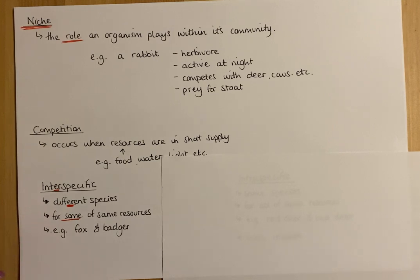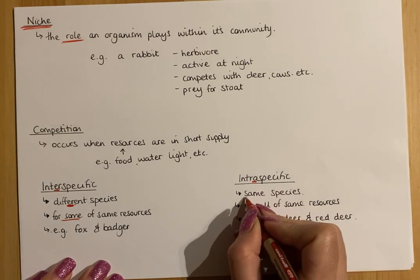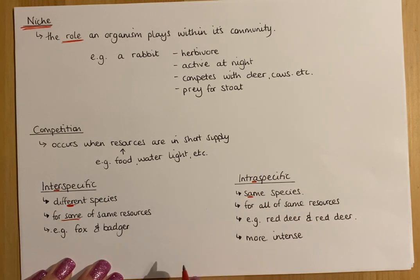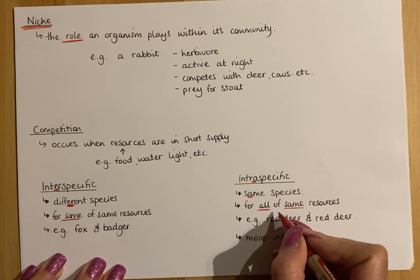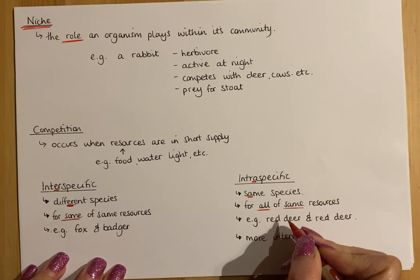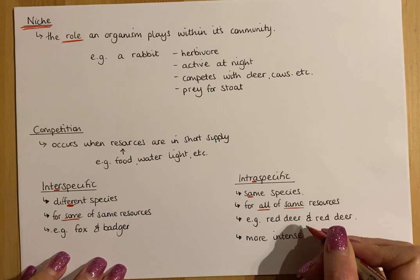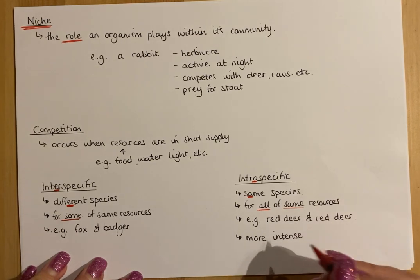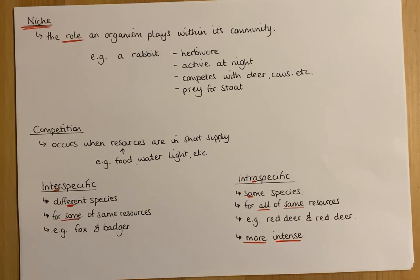Intraspecific competition occurs between members of the same species — for example, a red deer competing with another red deer. Because they are the same species, they compete for exactly the same resources: the same food, water, mates, space, habitat, and territory. Therefore this competition is far more intense, and you're much more likely to lose in intraspecific competition than in interspecific competition.